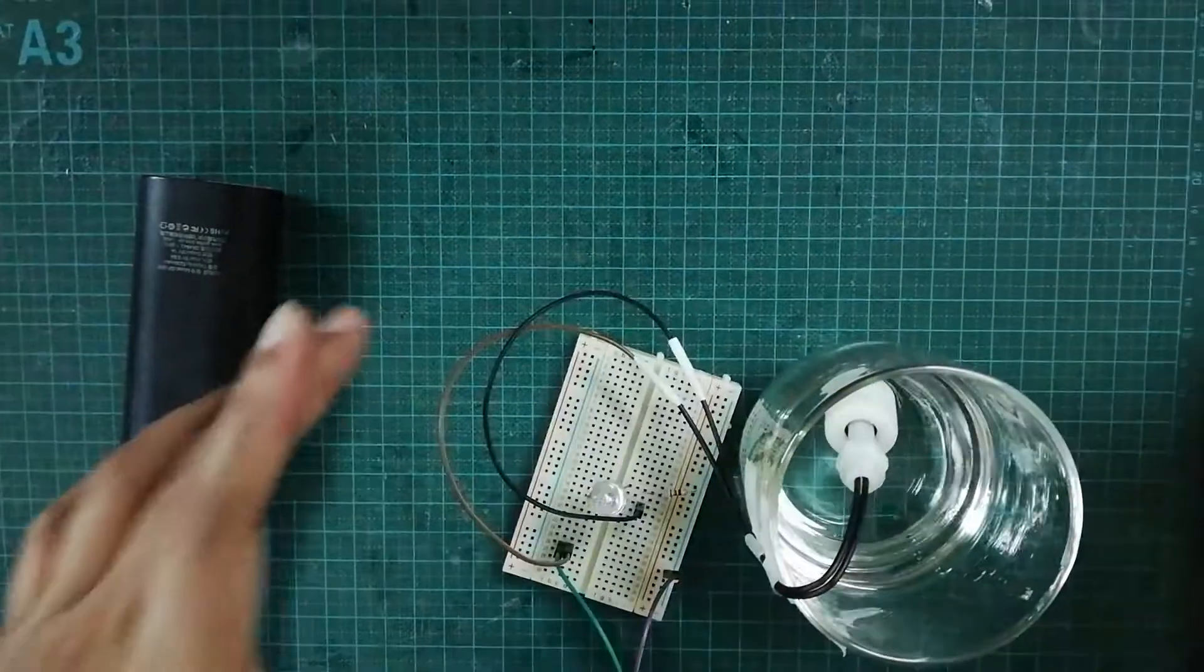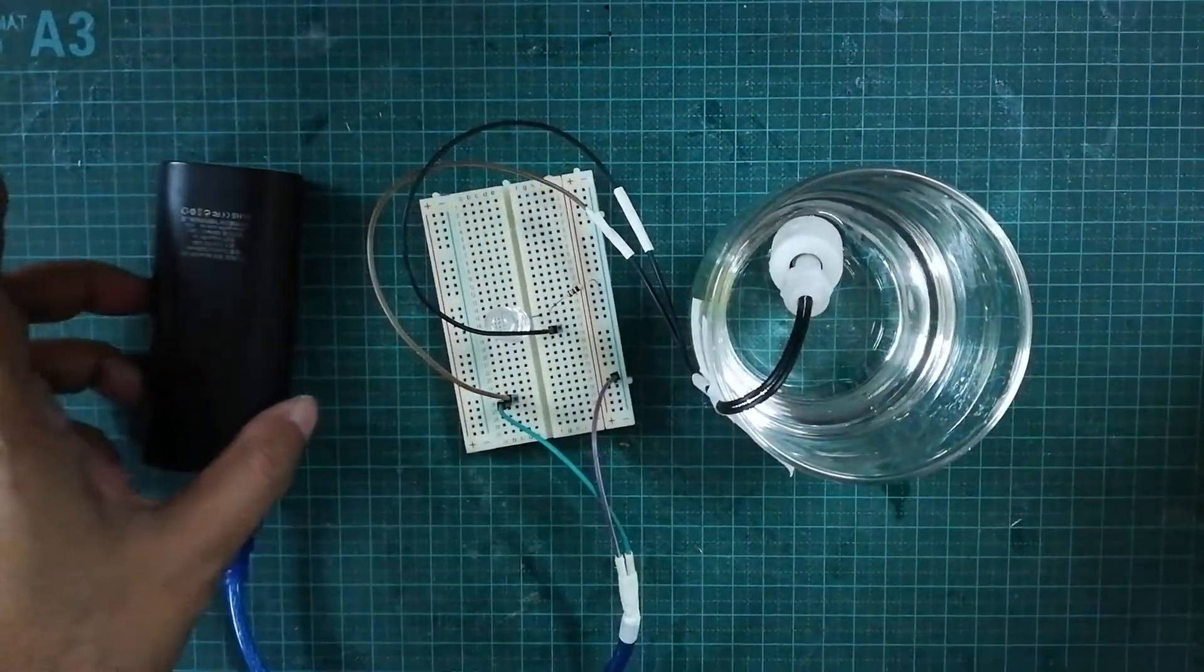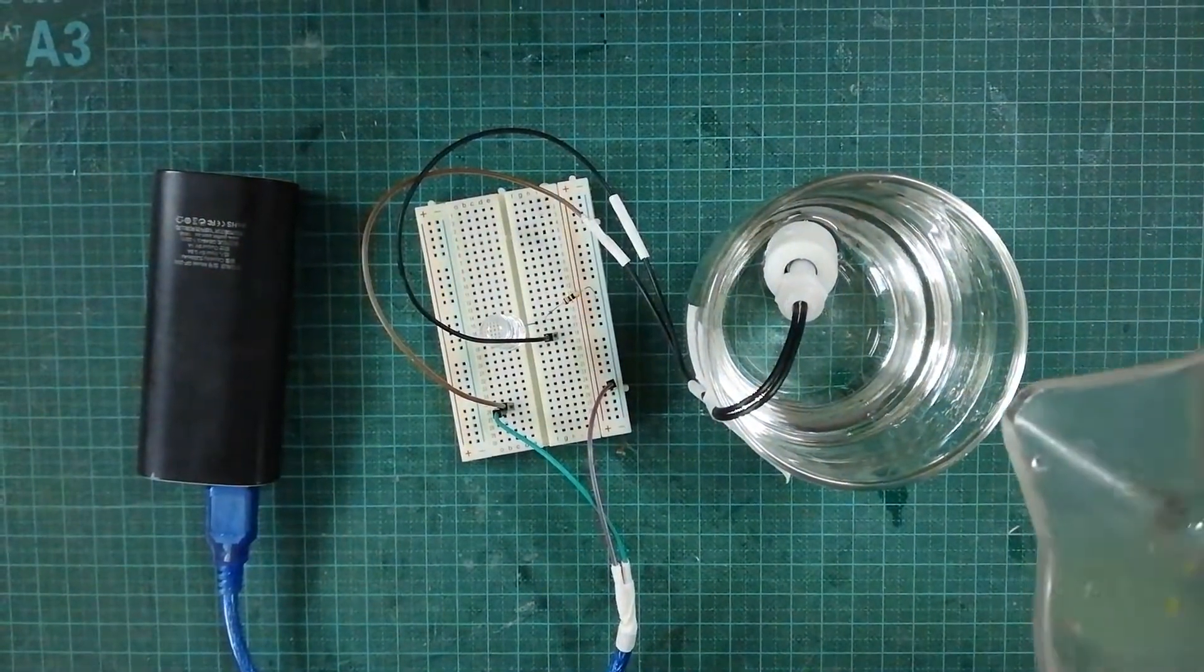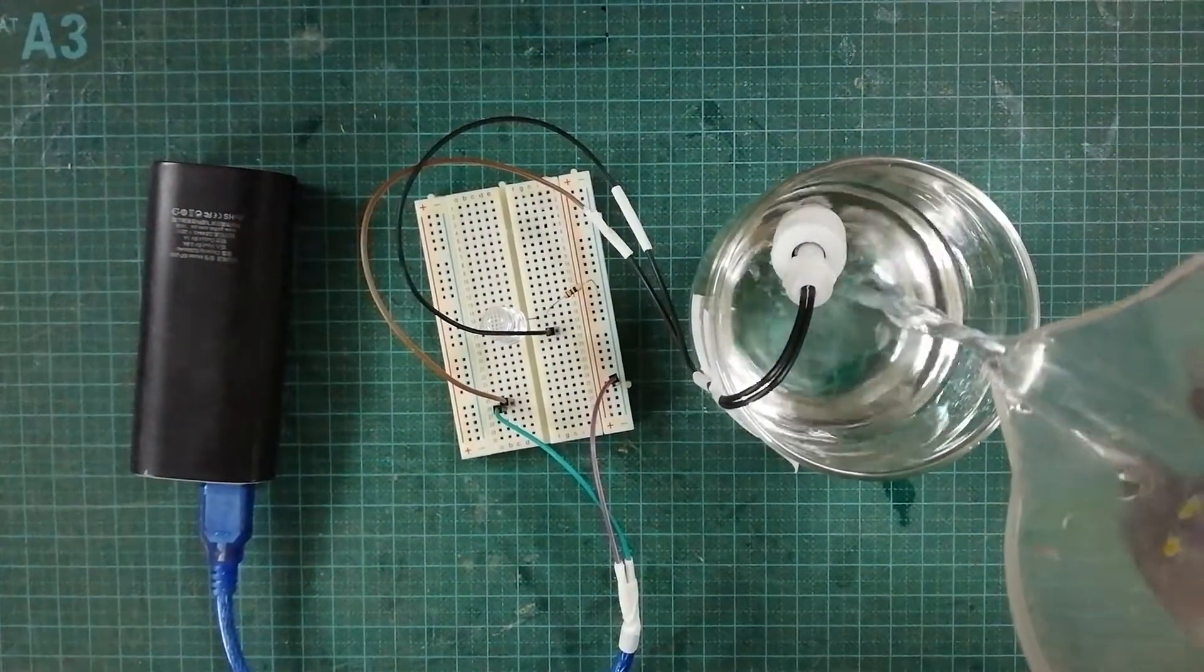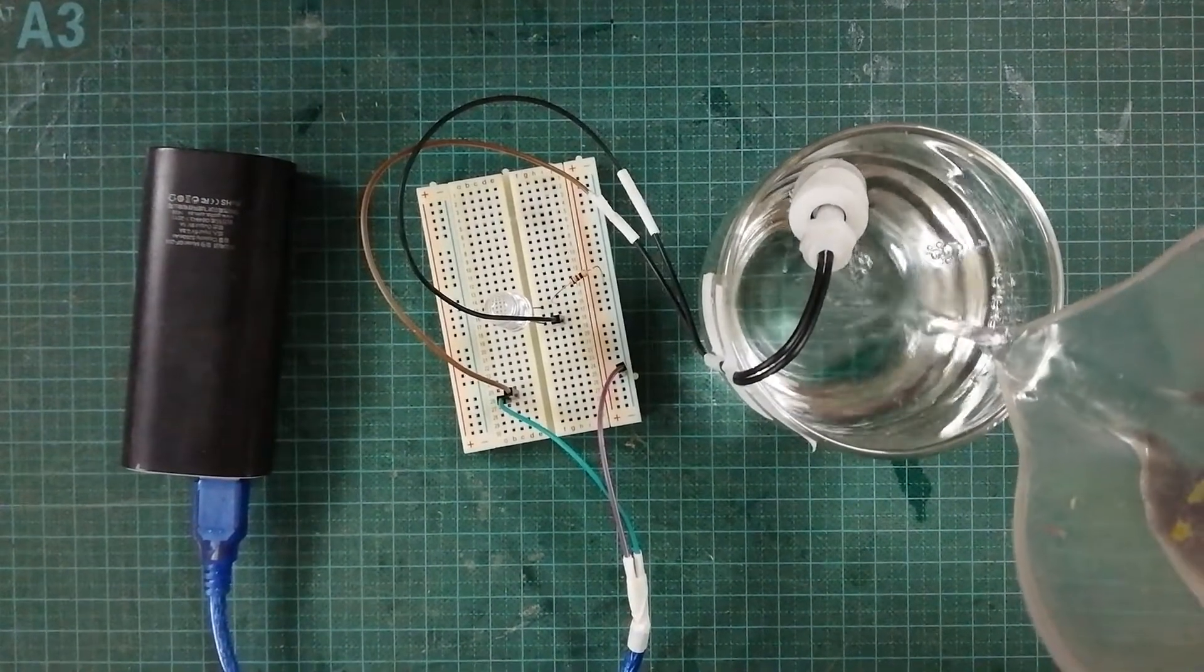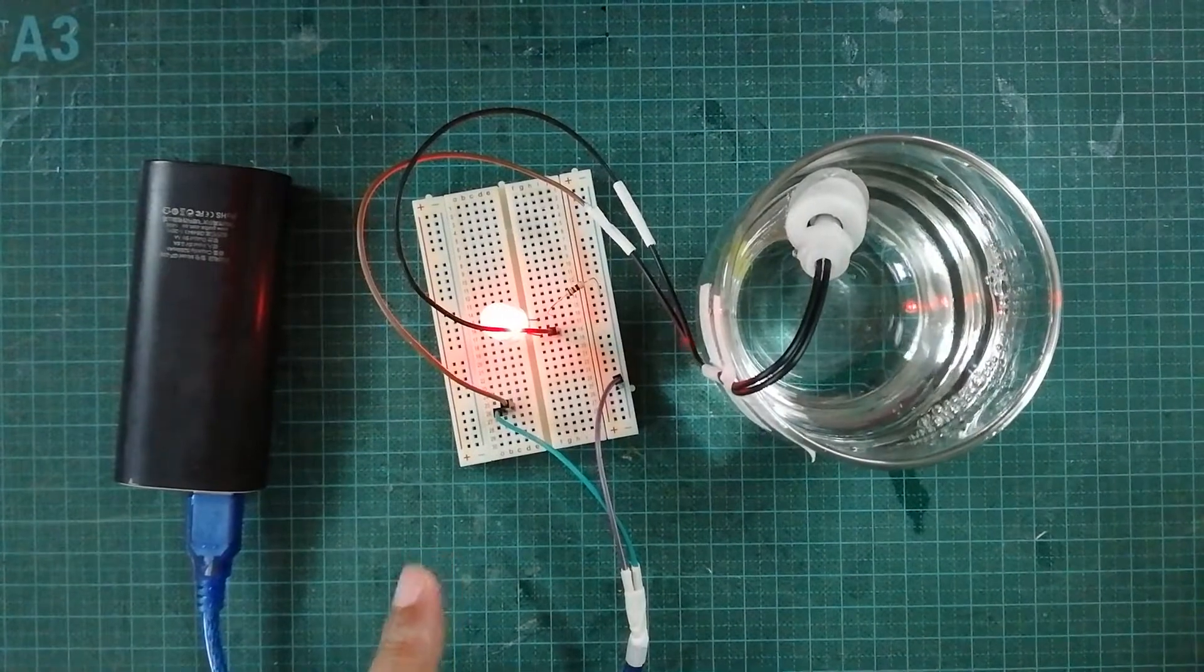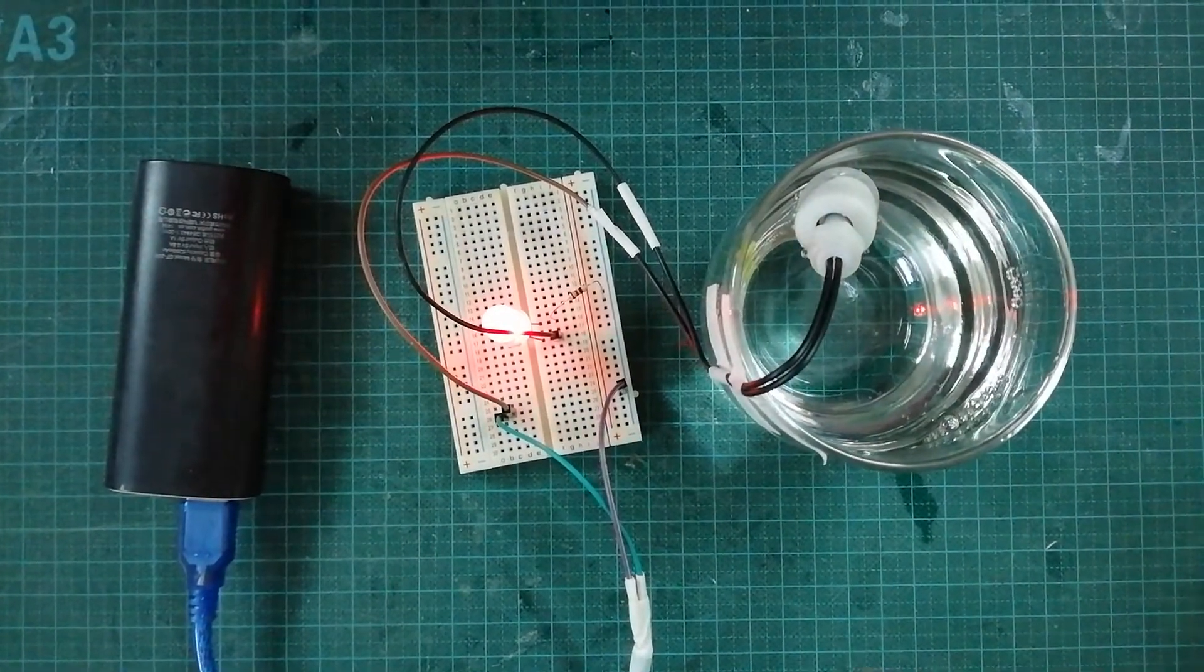I'm reducing the water to test it again. Now I'm pouring some water and the LED is blinking. So this is the water level indicator.